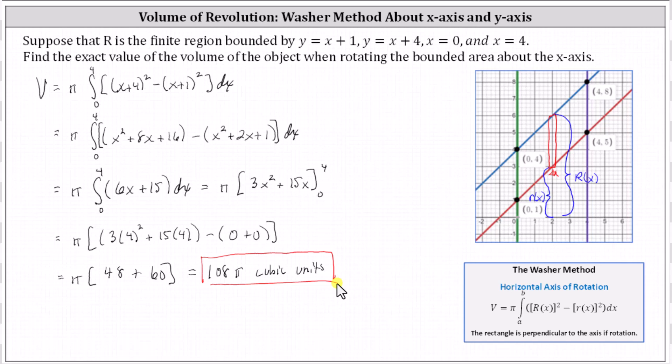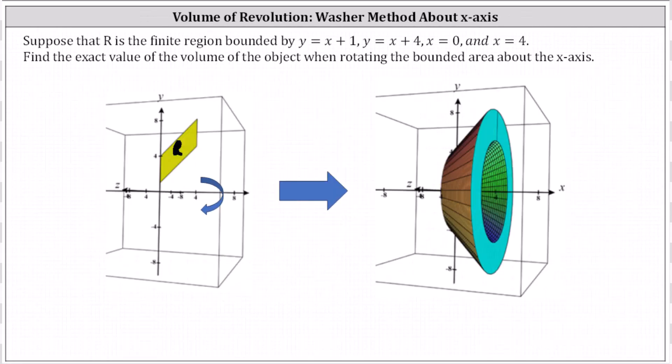This is the exact volume of the solid when the bounded region R is rotated about the x-axis, producing the solid shown here on the right. I hope you found this helpful.